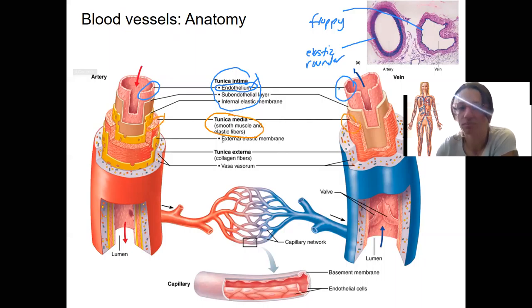Then we've got the media, smooth muscle, and elastic fibers. That's right here and right here. You can already see there's some differences between the two. And then we've got that tunica externa. So outside, and that's our collagen fibers. So that is right here.